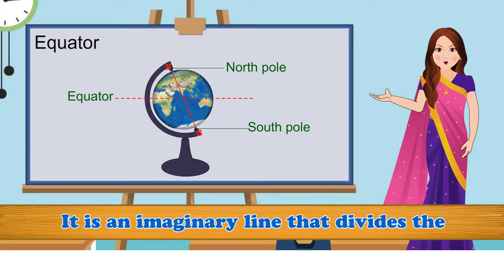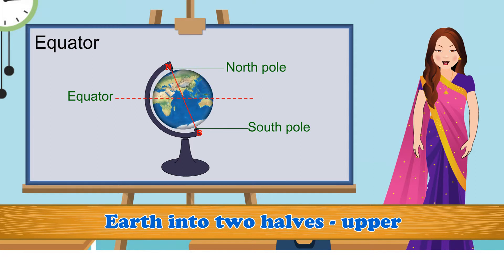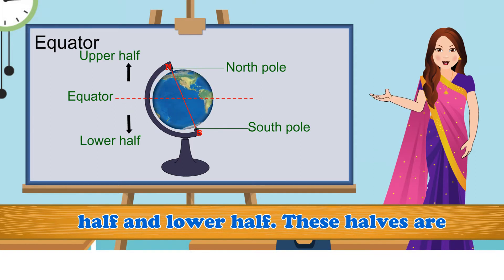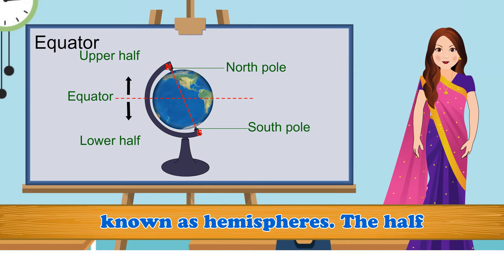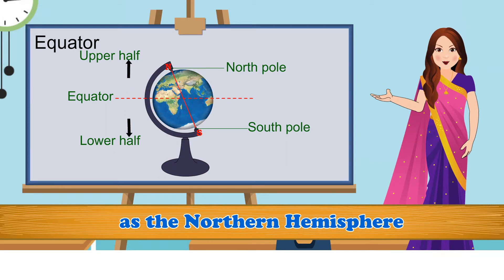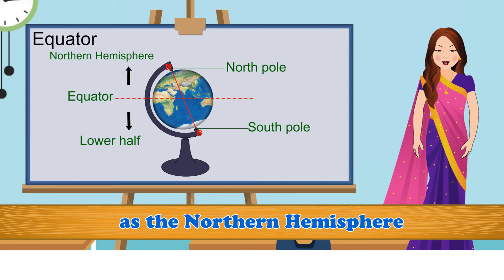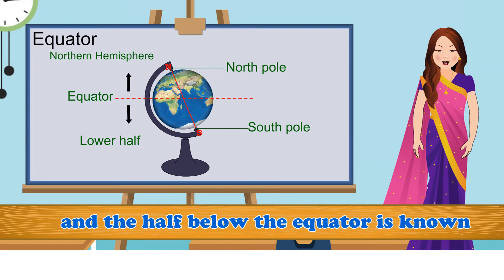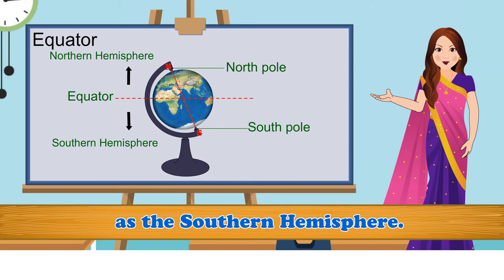Equator: It is an imaginary line that divides the Earth into two halves — upper half and lower half. These halves are known as hemispheres. The half of the Earth above the equator is known as the northern hemisphere, and the half below the equator is known as the southern hemisphere.